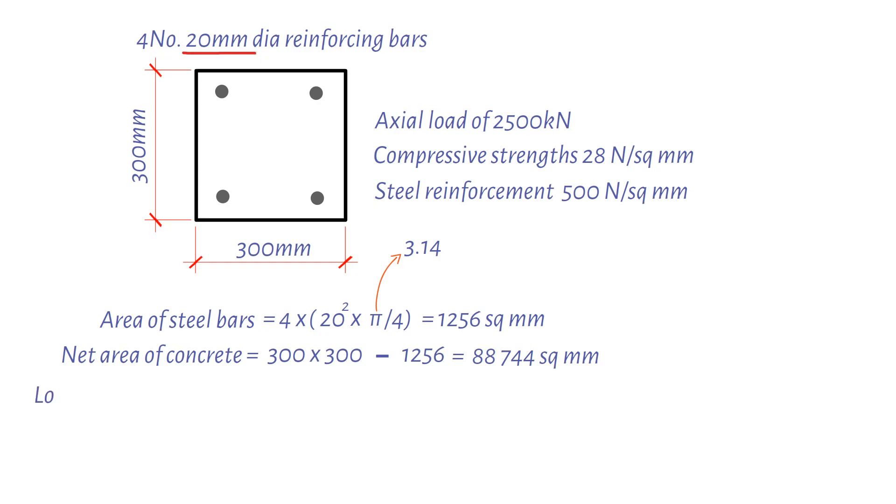Therefore, the load capacity of the column equals force in concrete plus force in steel. Force in concrete equals the design compressive strength, 28 newtons per square millimeter, multiplied by the net area of concrete, 88,744 square millimeters.